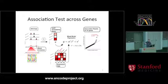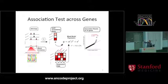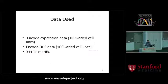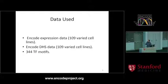You can do an association study for expression across the genes and compare this to the motif accessibility scores. What you would hope is that if a factor is responsible for the transition between open and closed chromatin — for example, if it's a pioneer factor — then the association should be strong, and you should see a strong signal for the annotated transcription factor. The data used is the ENCODE expression data for 109 cell lines, the corresponding DHS data, and the library of motifs.